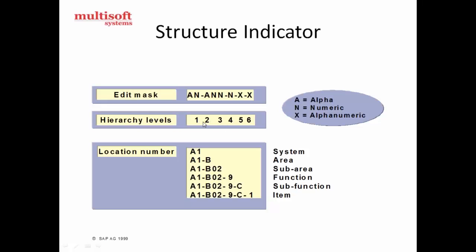In functional locations, the maximum hierarchical level is six. We can keep it from one up to six — not more than that. The six-level hierarchical structure is based on the location number, and you can name it any way you like.